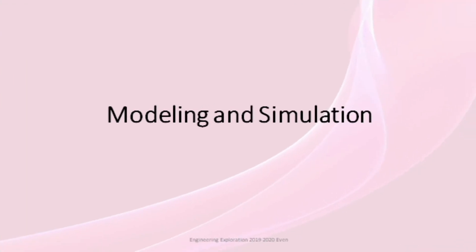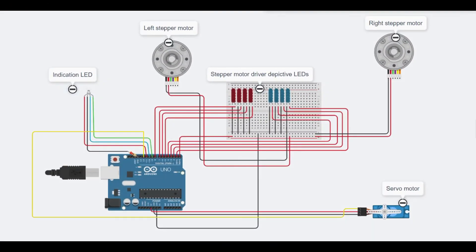Next, we move on to modeling and simulation. This is the Tinkercad simulation of our machine. In this simulation, we have an Arduino Uno R3 and servo motor, two stepper motors, and an indication LED and depicted LEDs for the stepper motor coils pinned on a breadboard. When we start the simulation, the indication LED glows green.